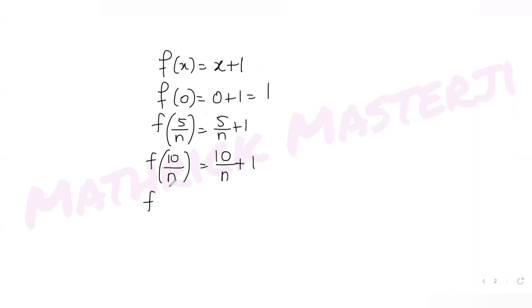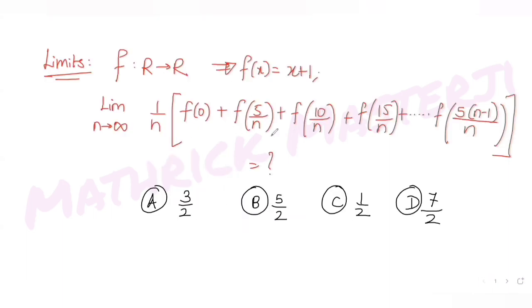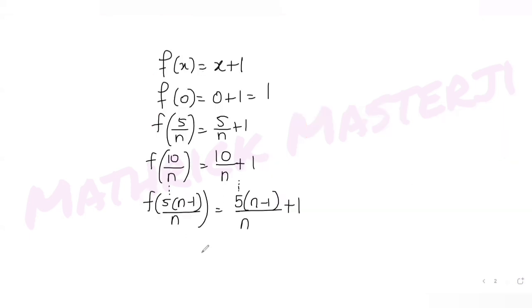The last function is f of 5 times n minus 1 divided by n, which equals 5 times n minus 1 divided by n plus 1. Now that we have all these function values, let's add them all together and then put them into the expression.